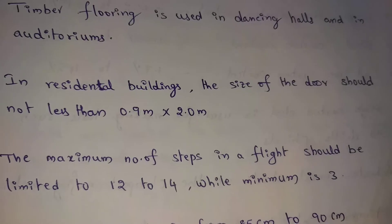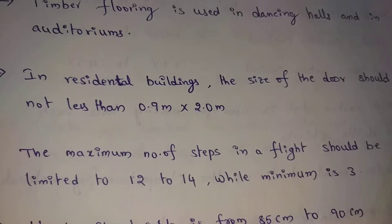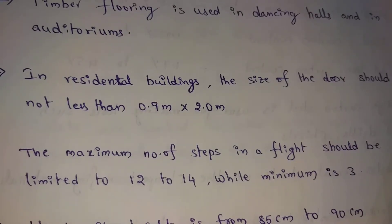In residential buildings, the size of door should not be less than 0.9m to 2.0m. The door size is 2m height minimum and width is 0.9m, that means 90cm minimum width.